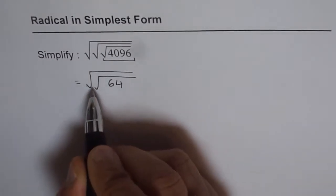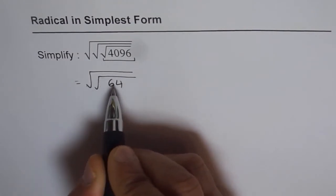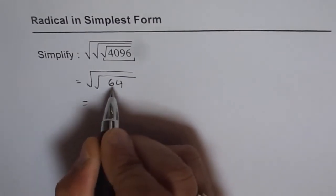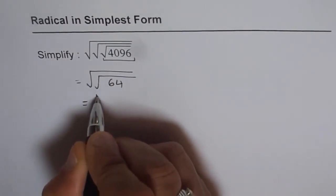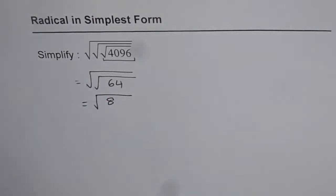Now you can use your calculator and find what is square root of 64. Square root of 64 is 8. So we get square root of square root of 64 is 8. So we get 8 here.